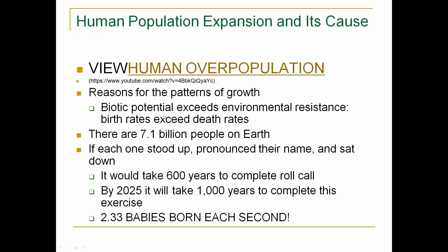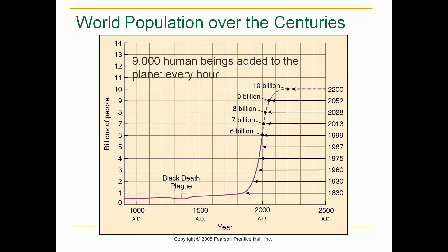When populations grow, whether they be bacteria or humans, the biotic potential exceeds the resistance, meaning births are way higher than deaths. Currently, there are about 7.1 billion people on Earth. If each one stood up, pronounced their name, and sat down, it would take 600 years to complete the roll call. By 2025, it will take 1,000 years. And every second I'm talking, there are 2.33 babies born. So our population is growing very fast.